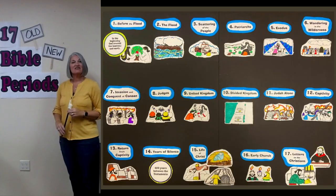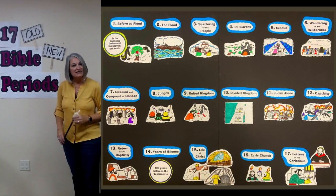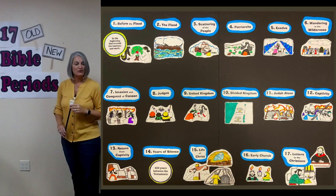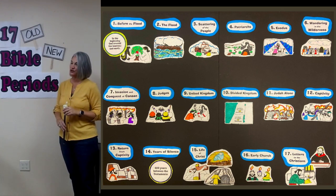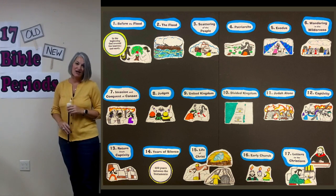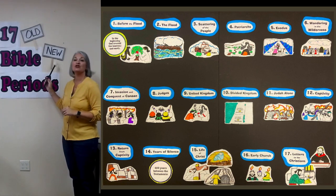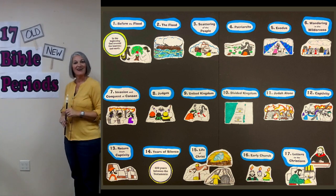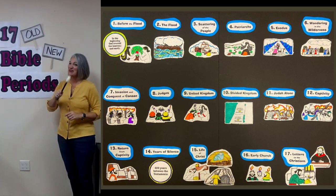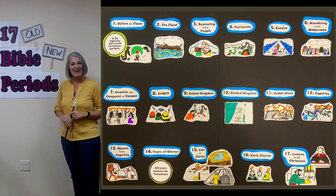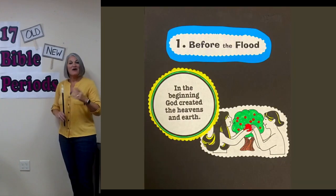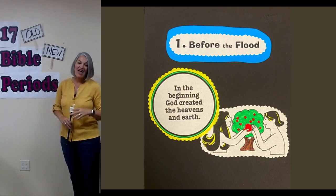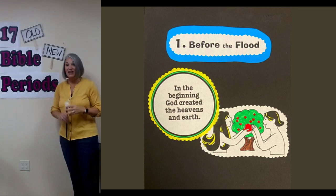Our next one is the first sin — eating fruit from a tree in the middle of a garden that they were told, 'Don't eat that.' That's an Old Testament one, and it might be our easiest one today: it's before the flood. It all started with that sin, and God had to have a plan to bring man back to him. That's why we have the whole rest of the Bible.